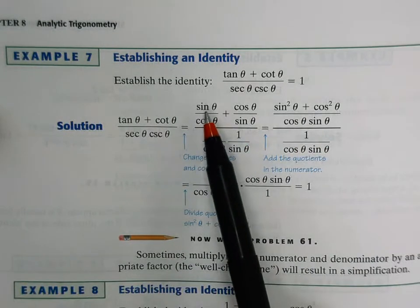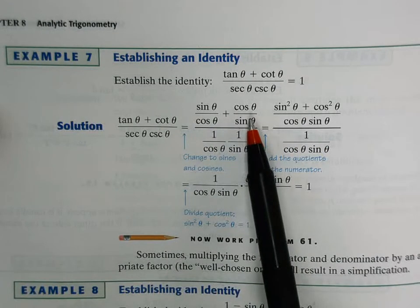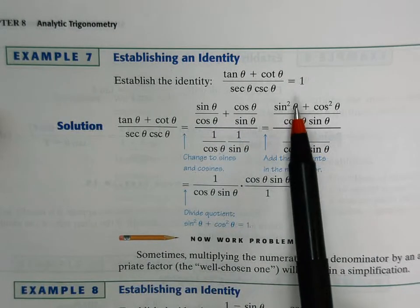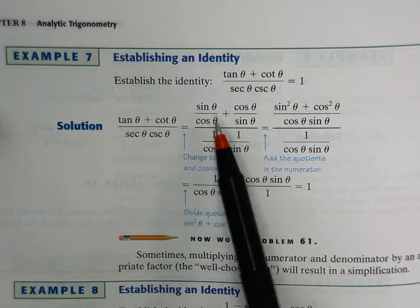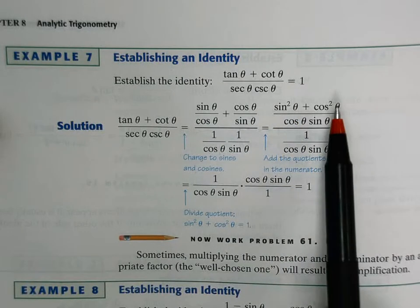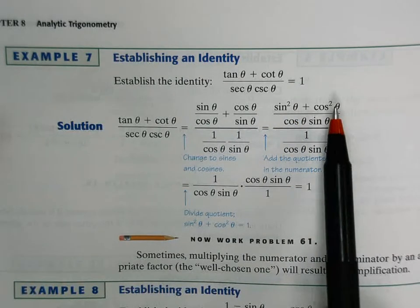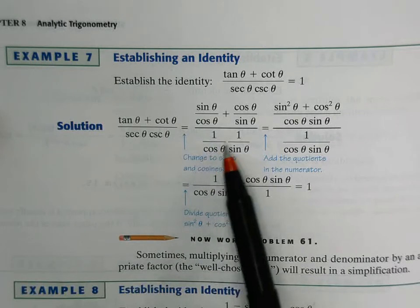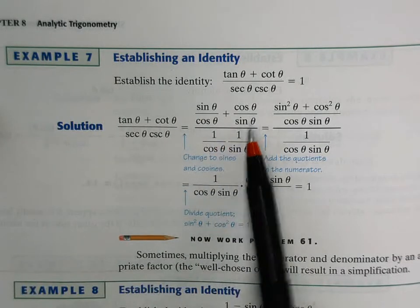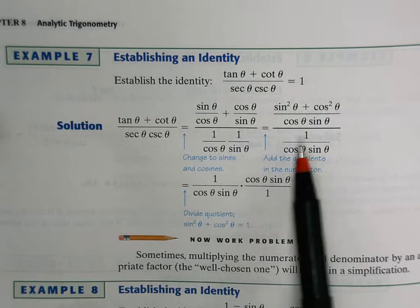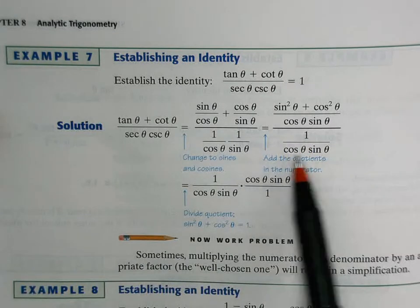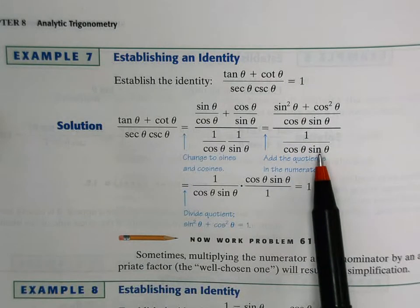The factor of sine in the numerator gets multiplied by sine and you get sine squared theta. Cosine gets multiplied by cosine, you get cosine squared theta. Multiply the two fractions across the top and across the bottom, and you get one over cosine times sine.